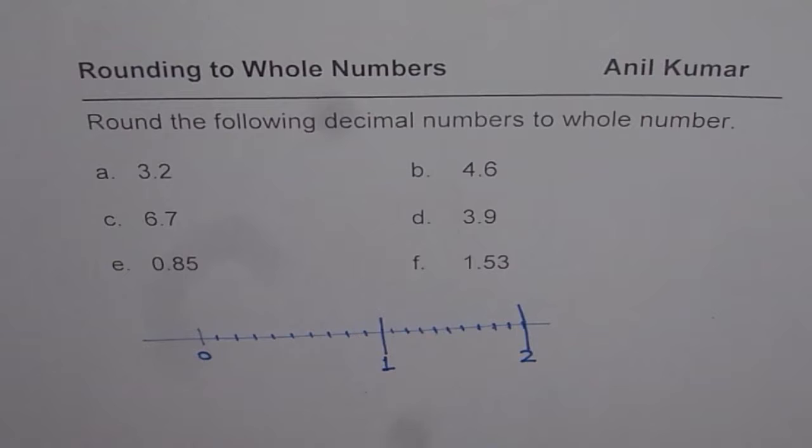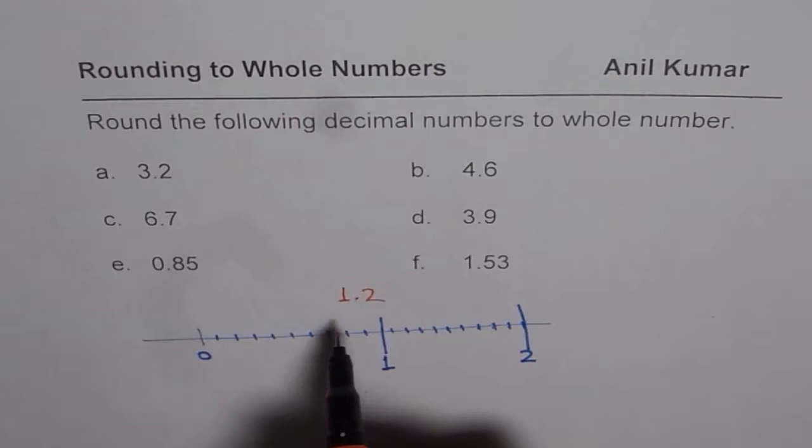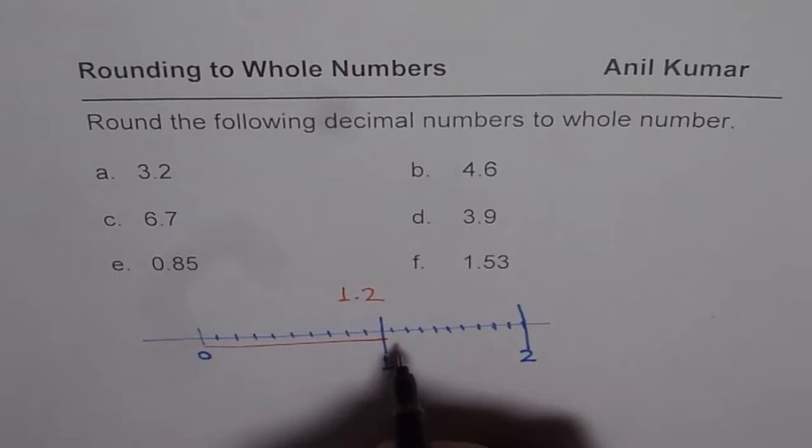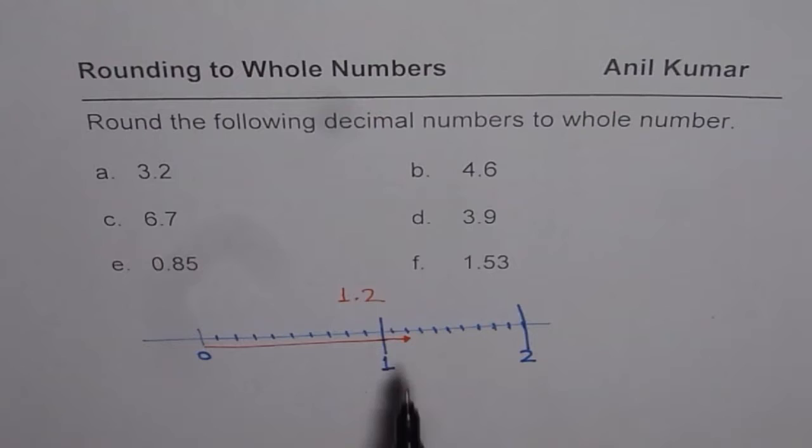So if I have a number which is, let us say, 1.2 - I am taking a different example, not these ones, this is for you to practice. If I take 1.2, that means from 0, let us say, draw a line, 1, and 0.2, this is 0.1, this is 0.2, is that much long. So this line represents 1.2.